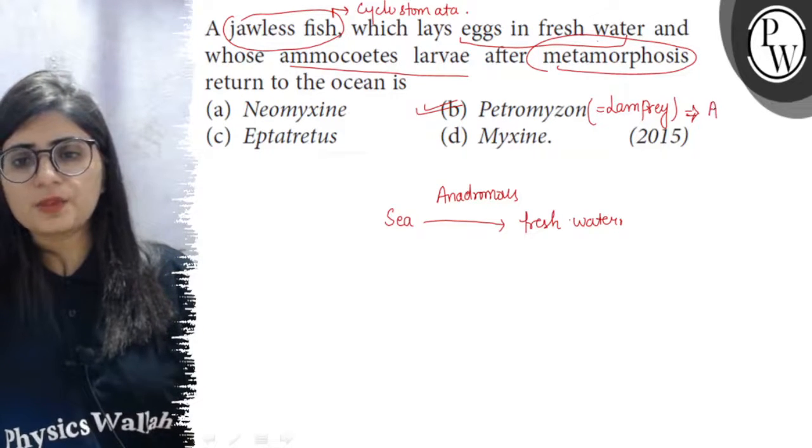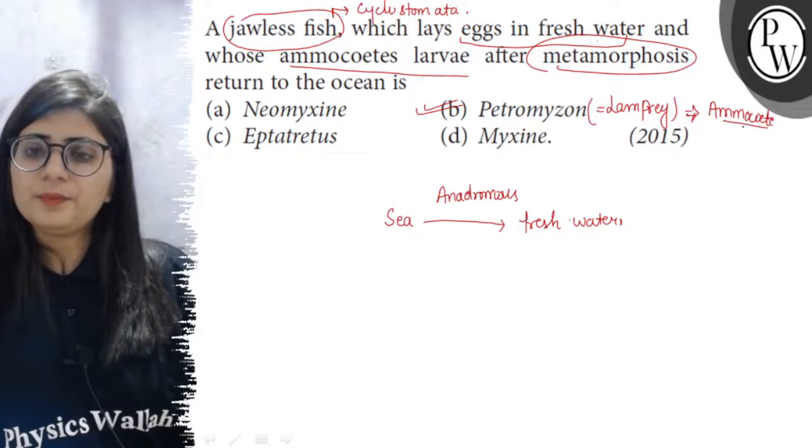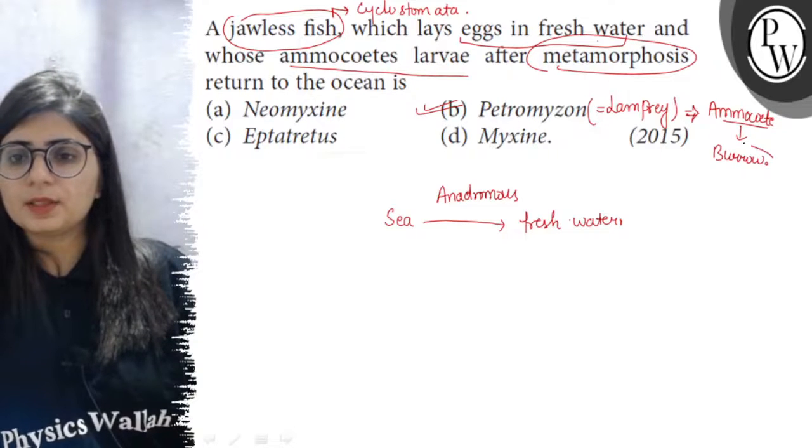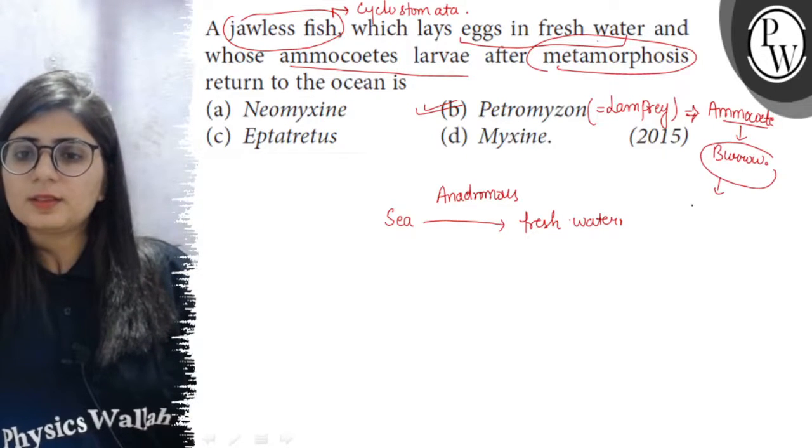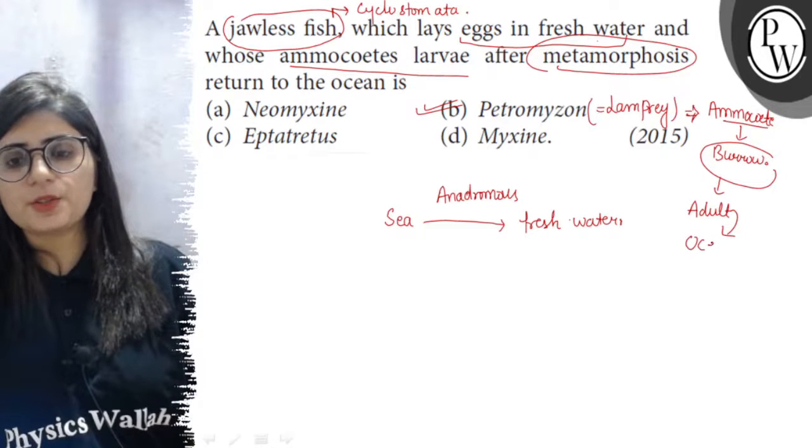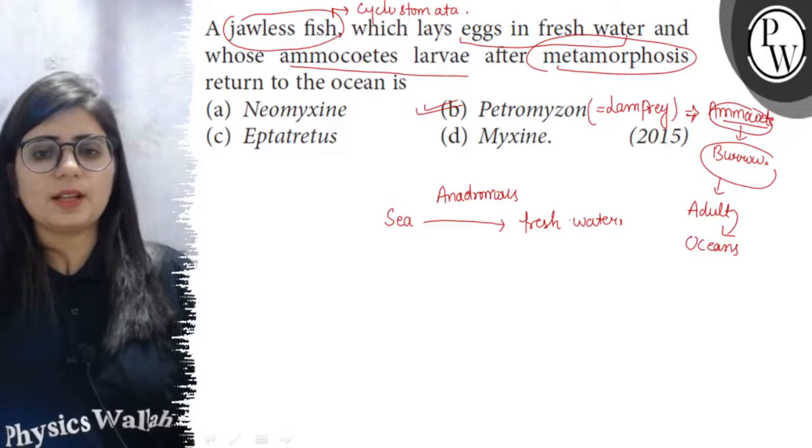Here the larva, the larva of this fish is known as the Amocitis larva. This larva lives in burrow, and after being transformed into adult, it comes back to the oceans. So, Petromyzon or the Lamprey is having Amocitis larva.